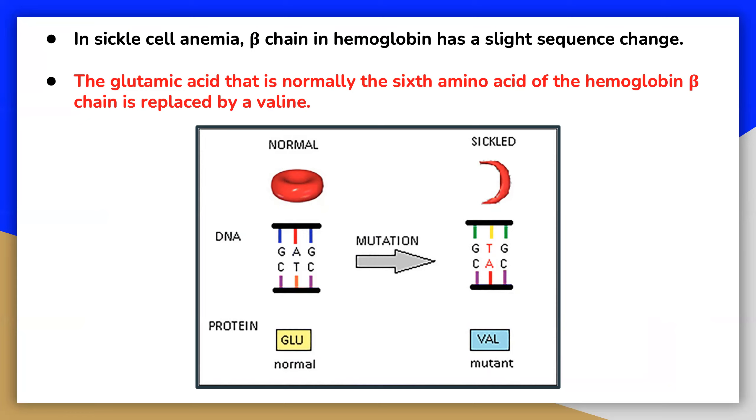What is most remarkable to consider is that a hemoglobin molecule is made up of two alpha chains and two beta chains, each consisting of about 150 amino acids, for a total of about 600 amino acids in the whole protein. The difference between a normal hemoglobin molecule and a sickle cell molecule is just two amino acids out of the approximately 600.